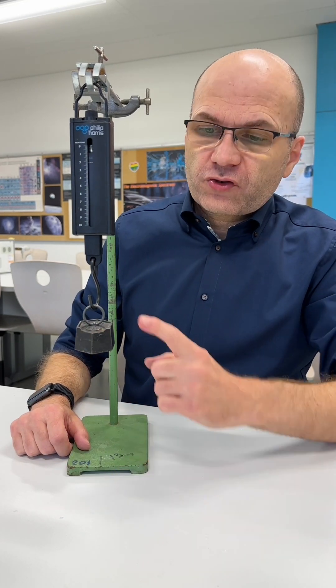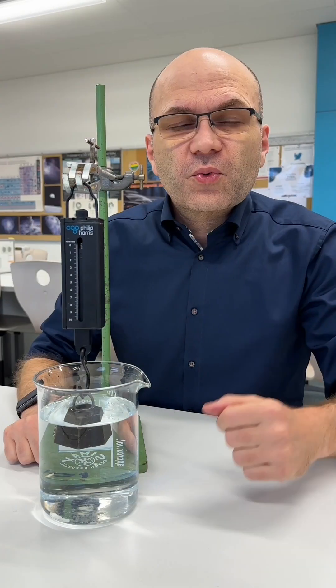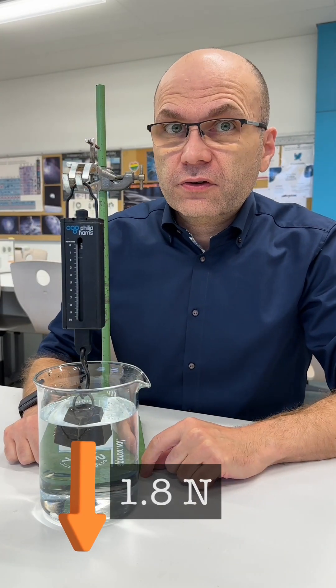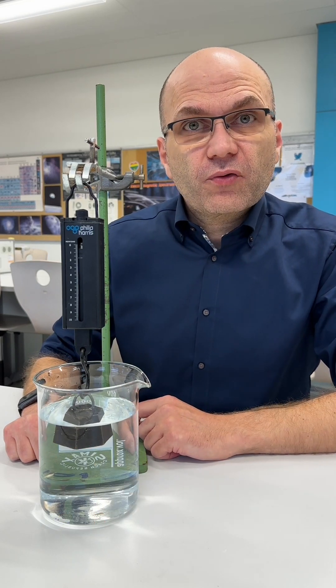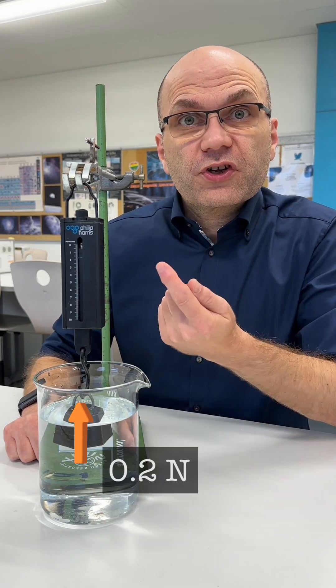Let's now submerge this object into the beaker. The reading is now 1.8 newtons, 0.2 newtons less than before. That means there must be a force of 0.2 newtons pushing the object upwards.